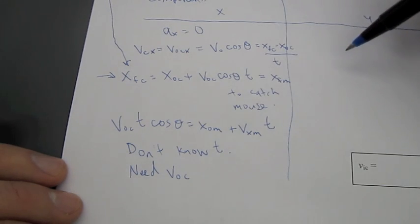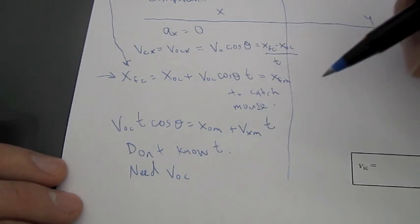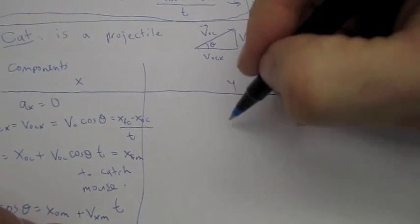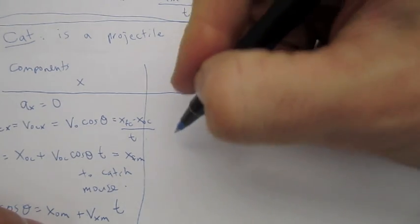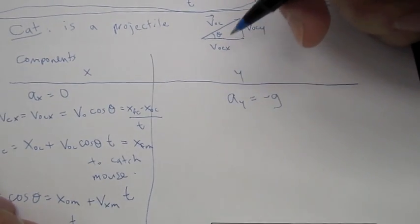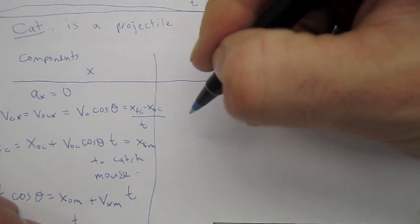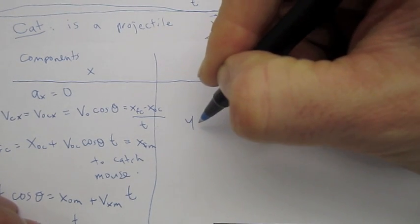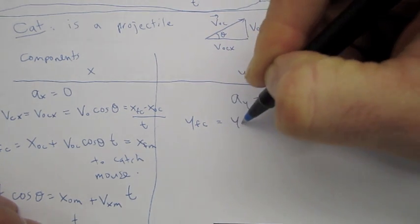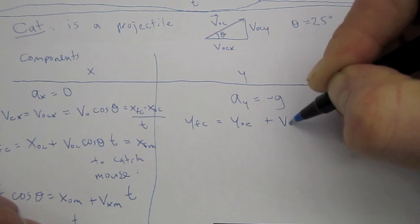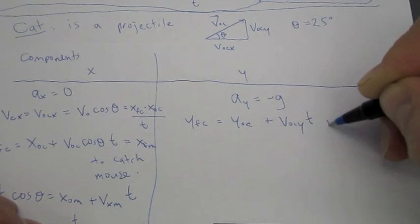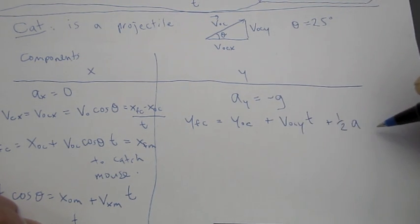So, the strategy here is we're going to use the Y component to solve for the time. So, let's go to the Y component. The Y component, we have A sub Y is equal to negative G, the negative 9.8. And, we need the time, and we know things about the positions and the initial velocity. So, I think the equation I want to use is Y final of the cat is equal to Y initial of the cat plus V initial of the cat in the Y direction times time plus 1 half A sub Y times T squared.